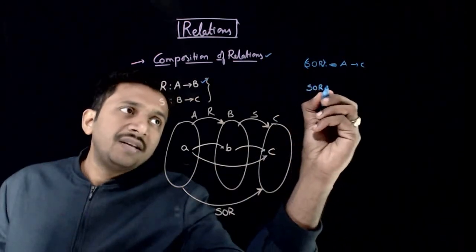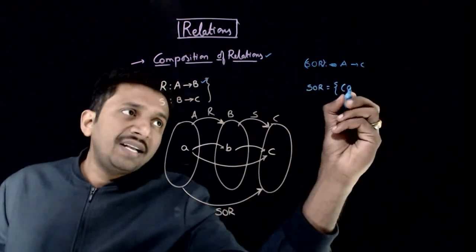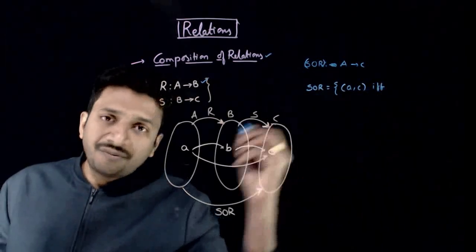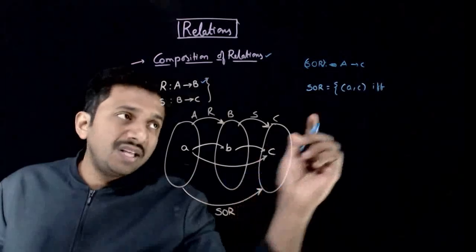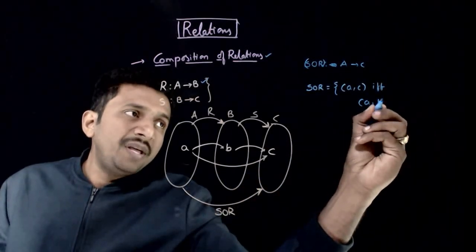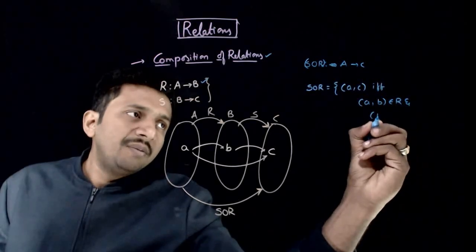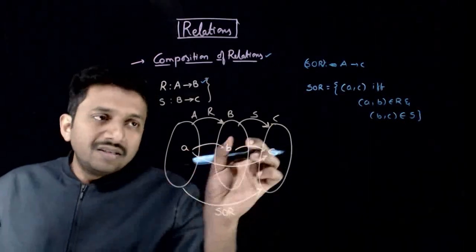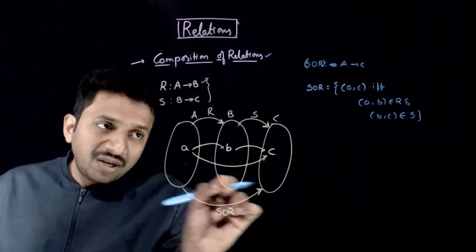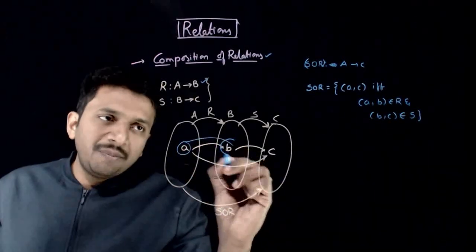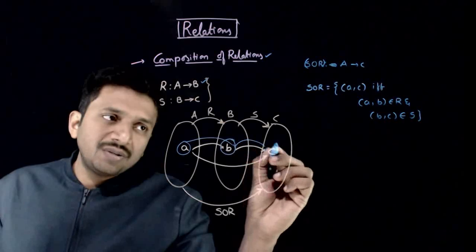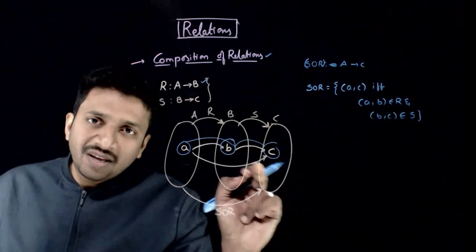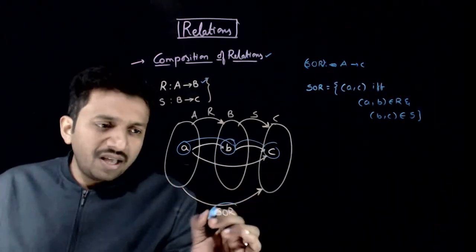SOR is the set connecting A to C, if and only if (a, b) belongs to R and (b, c) belongs to S. So SOR relates a to c if a is connected to b by the relation R and b is connected to c by the relation S. If these two are valid, then a is connected to c by the composite relation SOR.